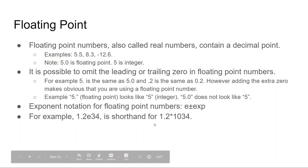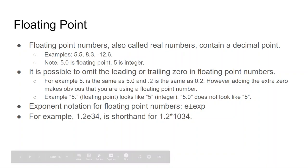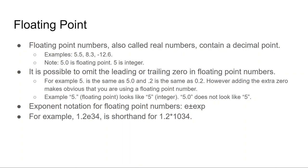Floating point numbers are also called real numbers and contain a decimal point. Examples: 5.5, 8.3, negative 12.6. 5.0 is a floating point number; 5 is an integer — this trips everyone up. If you're initializing a floating point variable, you cannot initialize it with a 5; you have to use 5.0. That is a floating point number; a 5 is not. It is also possible to omit the leading or trailing zero in floating point numbers, but adding the extra zero makes it obvious you're using floating point.